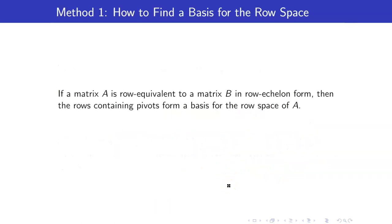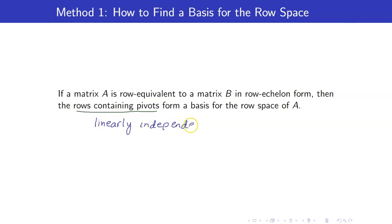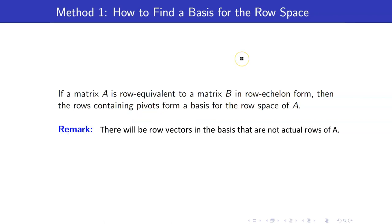The theorem we discussed enables us to find the basis for the row space. To get the row space of a matrix, we get its row echelon form, and the rows containing pivots form a basis for the row space. We get the pivot rows because they are always linearly independent, and once we have those linearly independent vectors, they form a basis for the row space. Note, however, that not all basis elements obtained using this method will be rows of A.